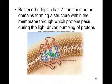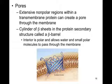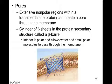Bacteriorhodopsin is a key transmembrane protein that carries out photosynthesis in some halophilic — salt-loving — archaean bacteria. It contains seven nonpolar helical segments that traverse the membrane, forming a structure through which protons can pass during light-driven pumping reactions. We may also see pores through the membrane, which have extensive nonpolar regions within a transmembrane protein. These pores consist of a cylinder of beta-pleated sheets — a beta-barrel — whose interior is polar, allowing water and small polar molecules to pass through, with nonpolar exterior regions anchoring it in the phospholipid bilayer.